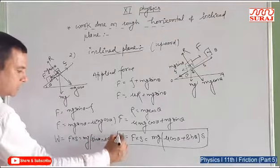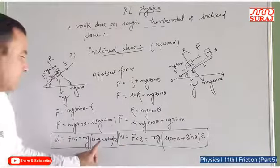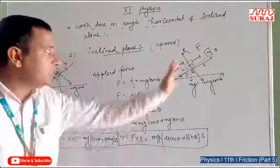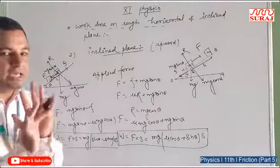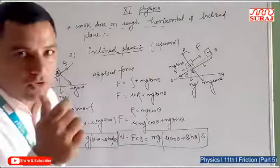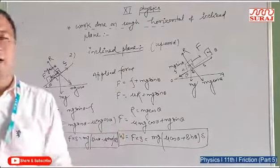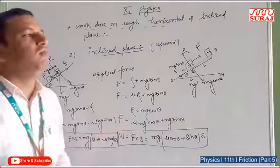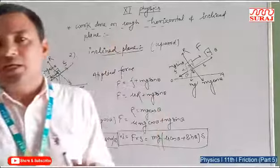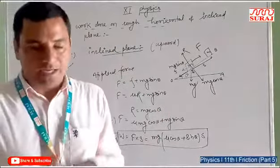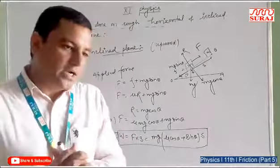The work done equals force into displacement. Taking mg as common, work done equals Mg(sinθ − μcosθ) × S. Both expressions are the same, with the only difference being the sign: when moving upward it is a plus sign, and when moving downward it is a minus sign. This is the work done on the rough horizontal surface and rough inclined plane.